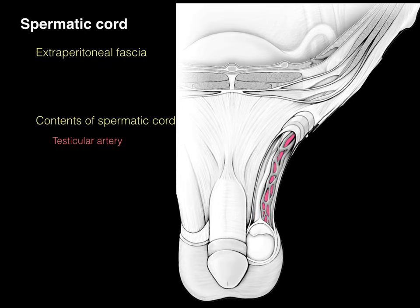The testicular artery arises from the abdominal aorta and provides blood supply. It courses through the deep inguinal ring, through the inguinal canal, out the superficial inguinal ring, and provides blood supply to the testis. The pampiniform plexus of veins transports blood in the opposite direction. Instead of just one vein, there are three or four veins that wrap around the testicular artery. The left pampiniform plexus drains to the left renal vein, and the right goes directly to the IVC.